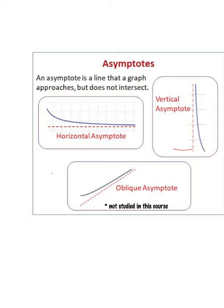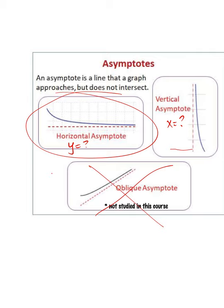Just a quick reminder on the types of asymptotes we can expect to see. We're going to work with horizontal asymptotes, which will be at a certain y value. We'll work with vertical asymptotes that will be at a certain x value. We won't work with oblique asymptotes in this course. It's easy to get horizontal and vertical turned around, because we're used to thinking we're changing the x value, but the y value is the constant for horizontal asymptotes.